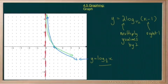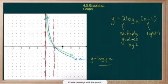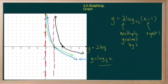Move the graph right 1 unit. The important part is that the asymptote will also move right 1. So here's my new asymptote, and my graph — steeper — is right there in black. So there's my graph of y equals 2 log base 1/2 of x minus 1.